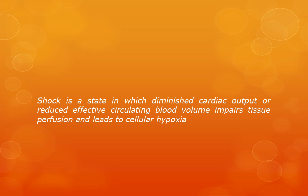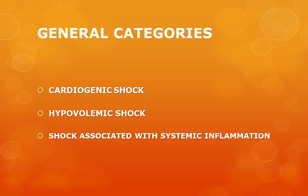We will discuss the important stages of shock and the general categories into which shock is divided. The general categories are cardiogenic shock, hypovolemic shock, and shock associated with systemic inflammation, which is also called septic shock. Cardiogenic shock and hypovolemic shock may both result from decreased cardiac output, but their etiologies are different.